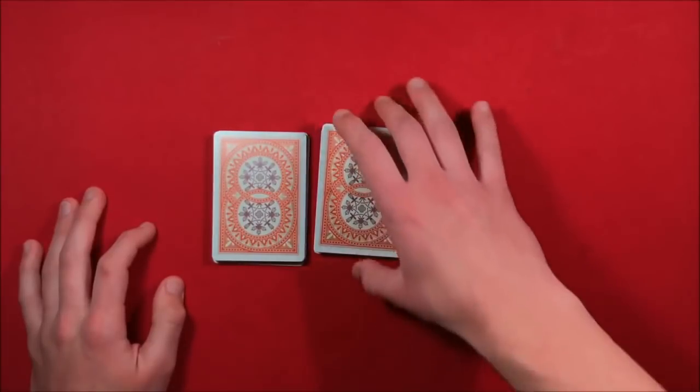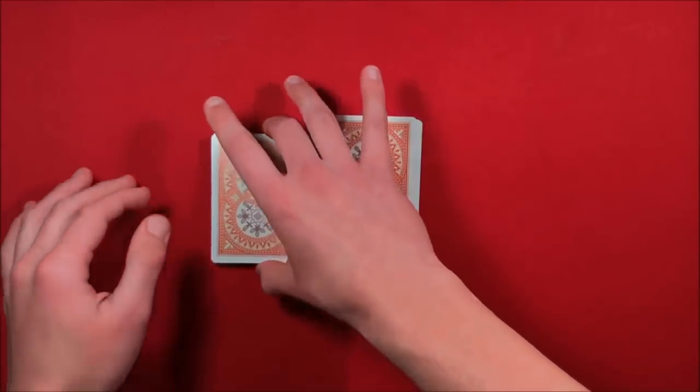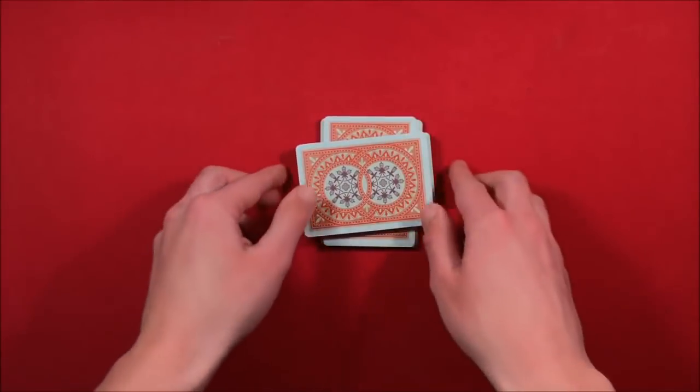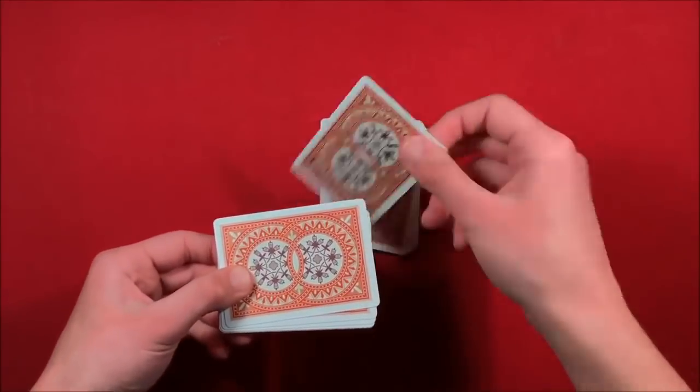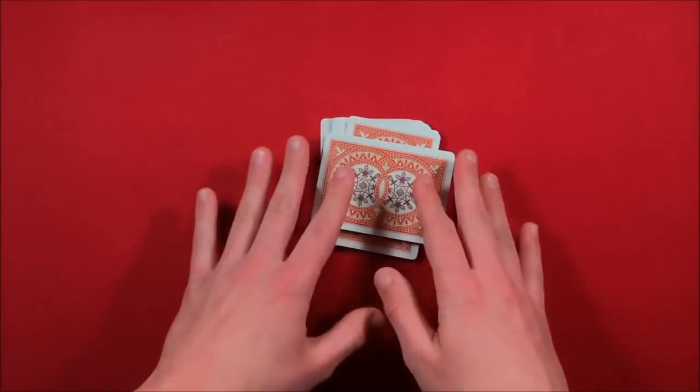You move the card pack over to the right, or whatever the spectator does. You take the bottom half of the packet, and you tilt it and you put it on top of the other packet, and the top card is going to be right there. So that's kind of how the trick works.